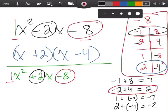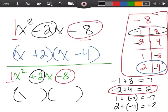So, again, when I do my shortcut, x and x, then I'm going to go negative 2, positive 4.